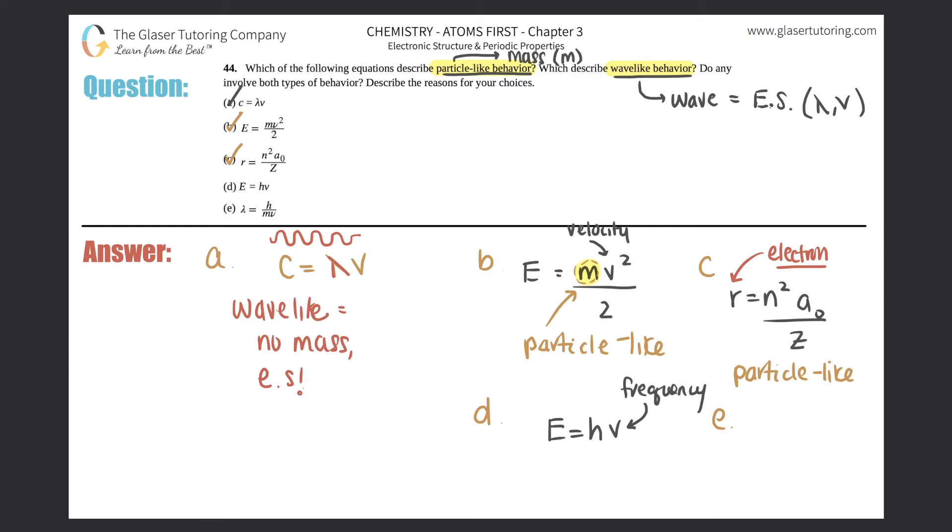Well, no mass here. And they're specifically talking about frequency, which interchanges back and forth between a wavelength. So this one would have to be talking about waves, a wave-like behavior. So this one is clearly wave-like because frequency is linked to wavelengths. Frequency is linked to waves, the electromagnetic spectrum.